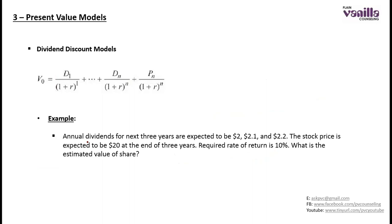To this question, you have been provided annual dividends for the next three years, which are expected to be $2, $2.1, and $2.2. The expected price is $20 at the end of three years. So: year one is $2, year two is $2.1, year three is $2.2, and the estimated price at year three is $20. You calculate the present value of all these future cash flows, sum them up, and that is your estimated value.